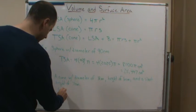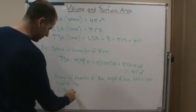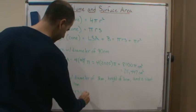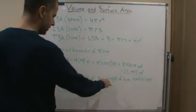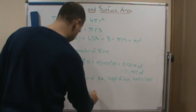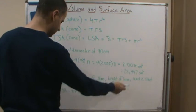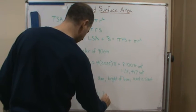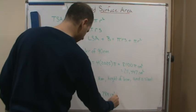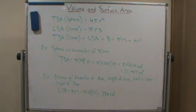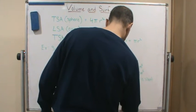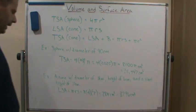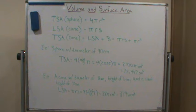The lateral surface area is just pi r s. The diameter is 8 centimeters, so the radius is 4 centimeters, and the slant height is 7 centimeters. So this gives us pi times 4 times 7, which is an exact answer of 28 pi centimeters squared. If we put that in our calculator and round to the hundredths place, we get 87.96 square centimeters.